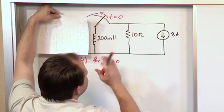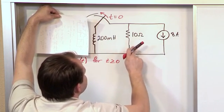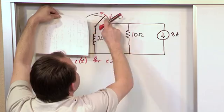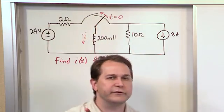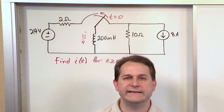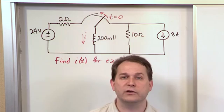So initially, before any switch moves anywhere, this 8 amp source is going to bypass this completely. It's going to totally go through the inductor and circulate like this. Because remember, inductors look like short circuits in the steady state after a long period of time has elapsed. If nothing is changing, they look like short circuits.